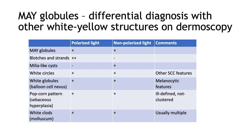Finally, what is the differential diagnosis of other white and yellow structures seen under dermoscopy? MAYG globules are seen in both polarized and non-polarized light. Shiny white blotches and strands are seen only in polarized light. Milia-like cysts are seen much better with non-polarized light. White circles of SCC are seen with both lights and the key features are other squamous cell carcinoma structures such as keratin, glomerular vessels, or serpiginous vessels. White globules of balloon cell nevus are also seen with both lights and the key features are other melanocytic structures such as a pigmented network.